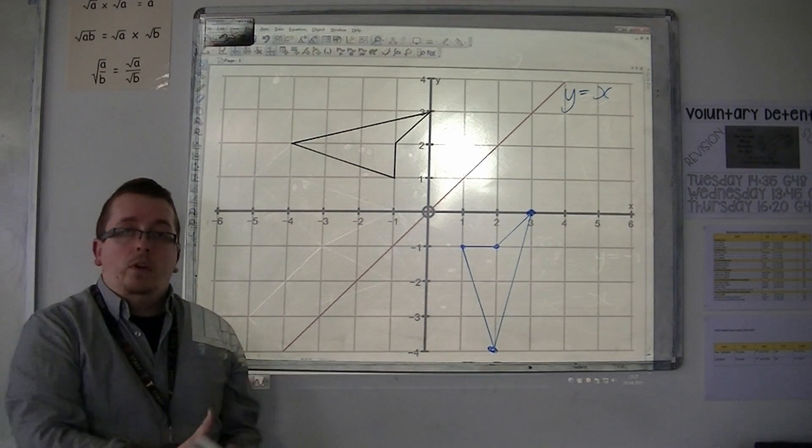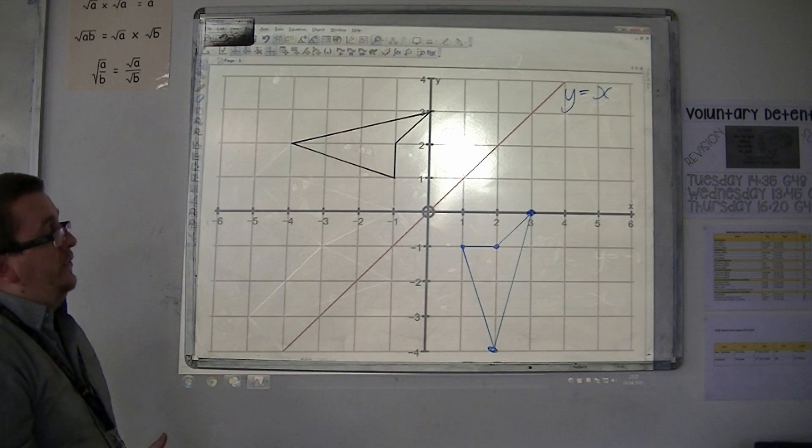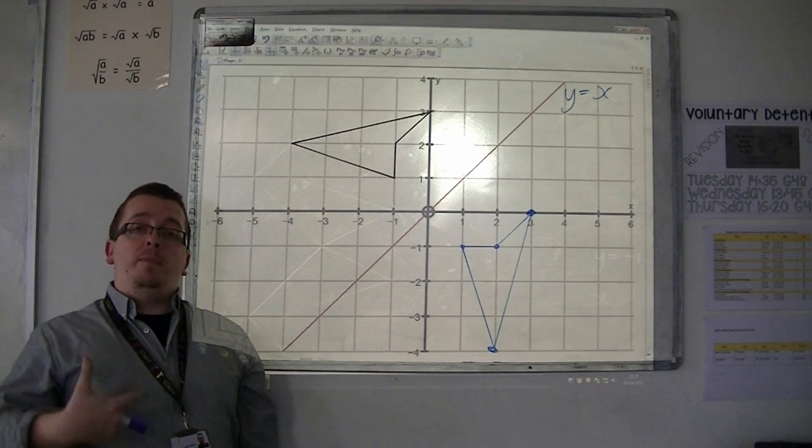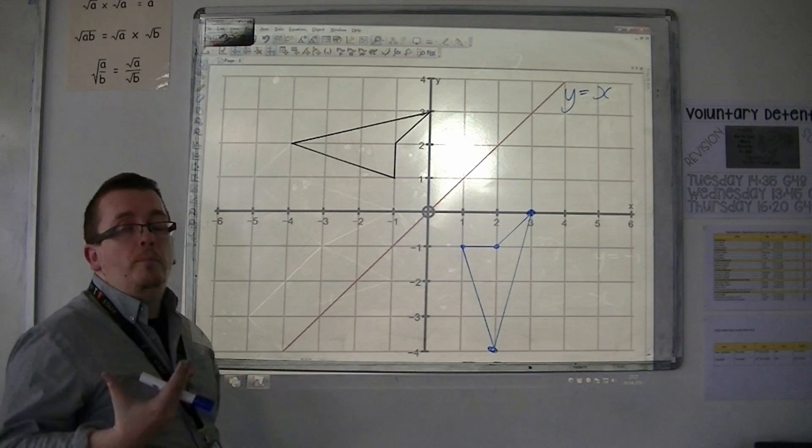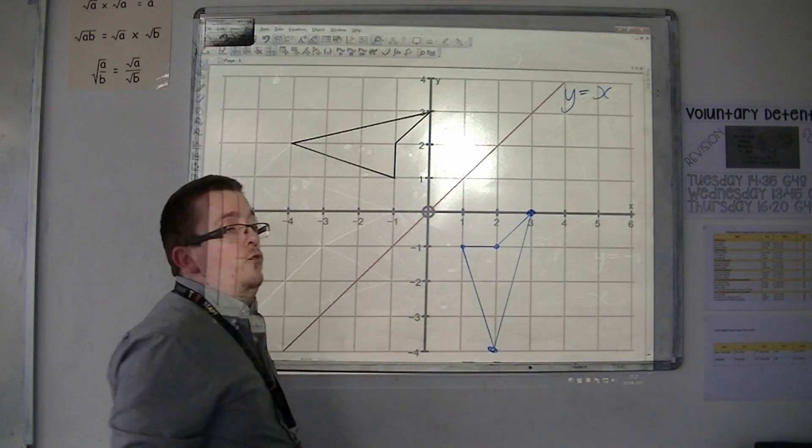And that's how the shape should look once reflected in the line Y equals X. The method is much the same if you're asked to reflect in the line Y equals minus X, it's just that the mirror line is going in the opposite direction.